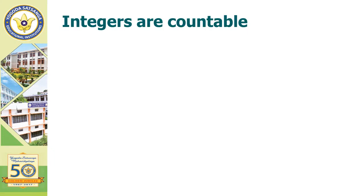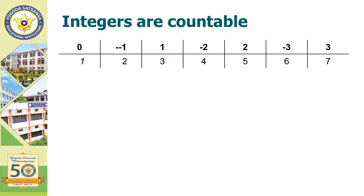Integers are countable. Integers consist of both positive and negative integers. For example, 0 is mapped to 1. Minus 1 has a corresponding value of 2. 1 is numbered as 3. Minus 2 is numbered as 4. 2 is numbered as 5. Minus 3 is numbered as 6. 3 is numbered as 7.